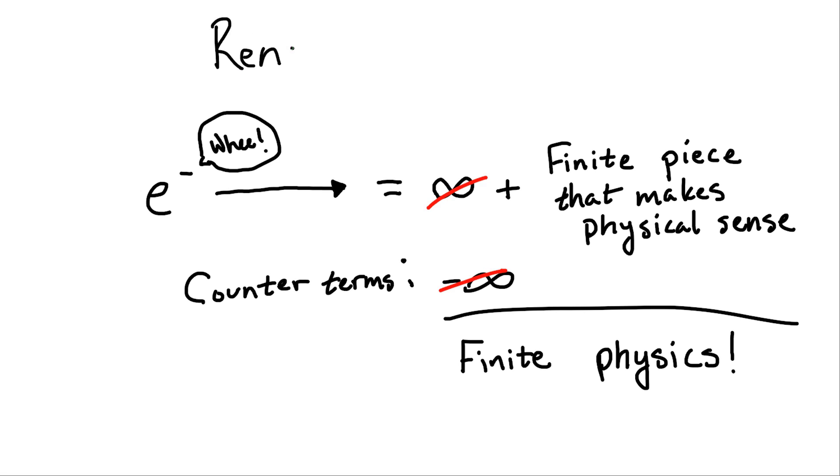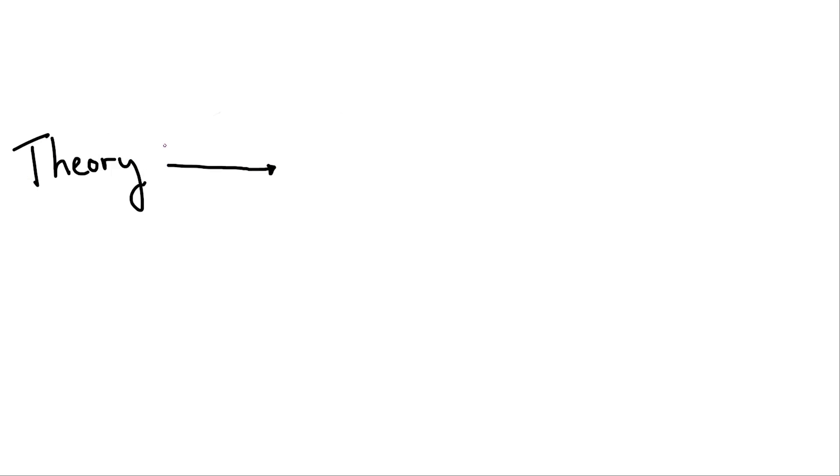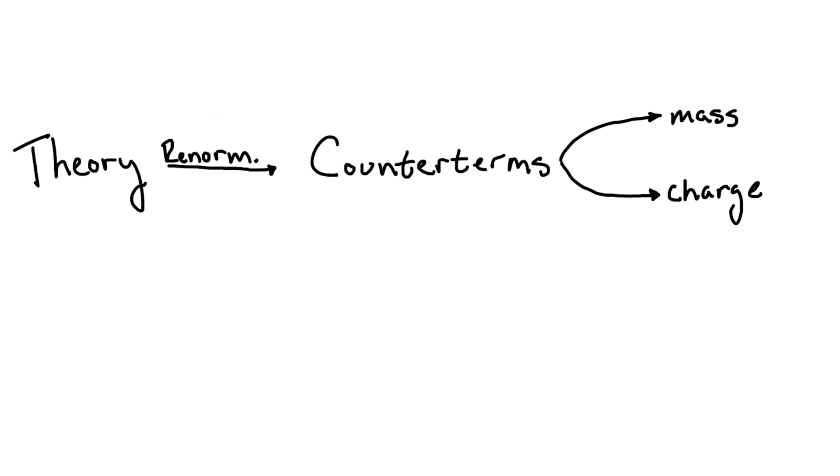This is known as the renormalization of a theory. But hold on, we can't just arbitrarily add in terms to our theories just to get rid of answers we don't like, can we? Well, we kind of can in most physical theories as long as it doesn't change the underlying physics. And in fact, this is guaranteed to be the case as long as we absorb these counterterms into free parameters of the theory, like charges and masses of particles. So, the trade-off is that our theory works, and works very well typically, but it's impossible to predict the values of these parameters.